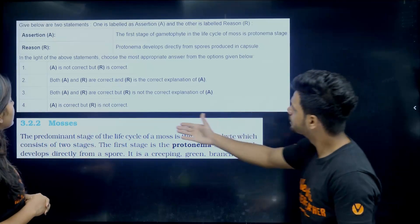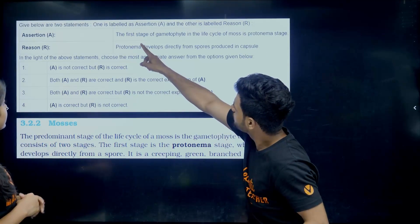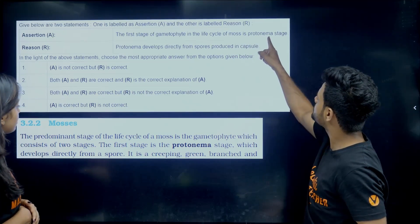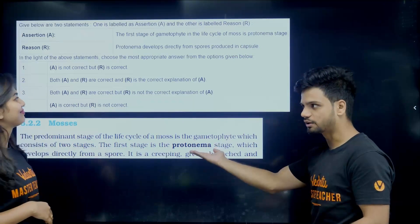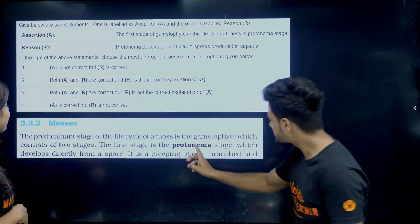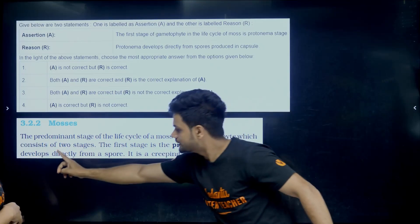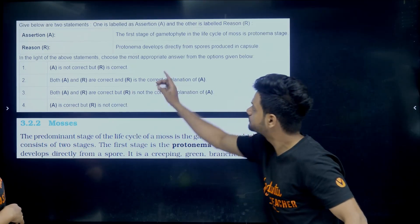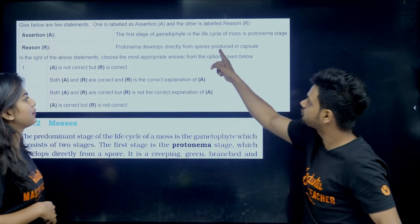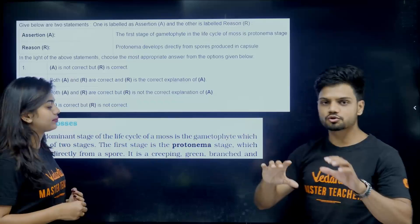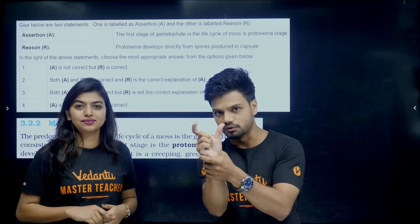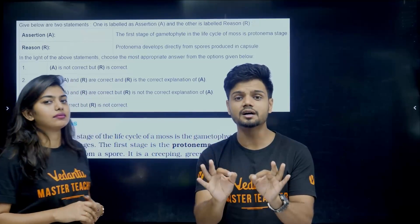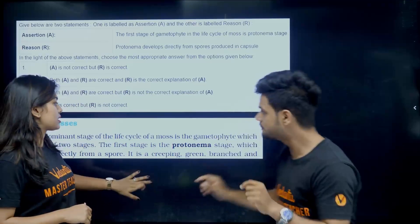This is from Plant Kingdom. The first stage of gametophyte in the life cycle of moss — Protonema stage. Protonema is a highlighted word. Can you see the next line: which develops directly from the spore. So 'directly from' — the bold letters. This question has been repeated year after year.